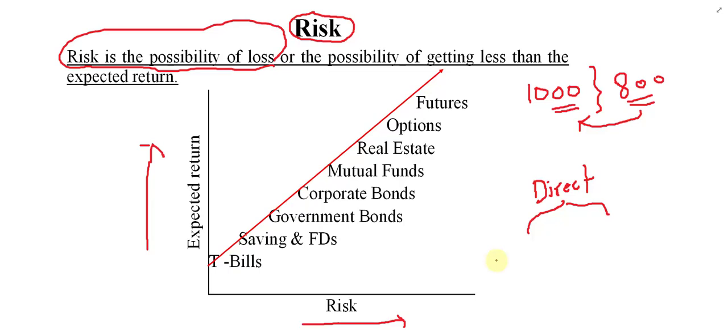When risk is more, return is also more. It means if you expect more profit, you definitely have to expect more risk as well. On the other side, if you expect less risk, there is also a chance of less profit.